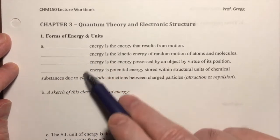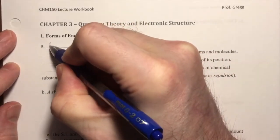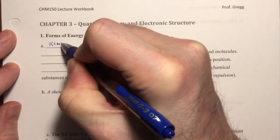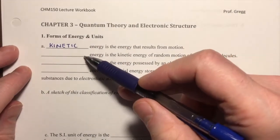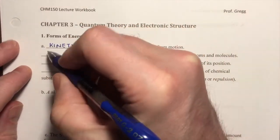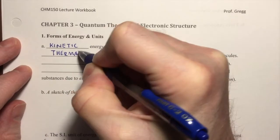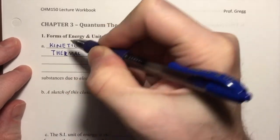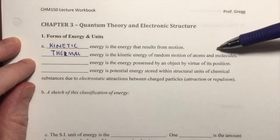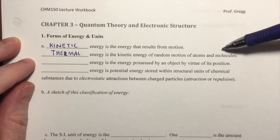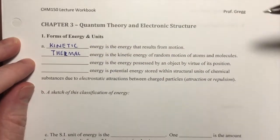So in these blanks, blank energy is the energy that results from motion, and you may recall that that is kinetic, K-I-N-E-T-I-C. And the specific type of kinetic energy that we are interested in when we are studying chemistry is thermal. Thermal energy is the kinetic energy of the random motion of atoms and molecules. When atoms and molecules are moving fast and they're vibrating very quickly, they have thermal energy.